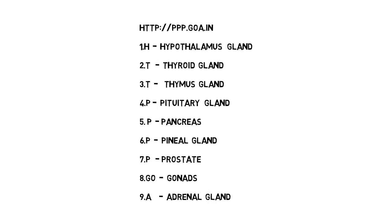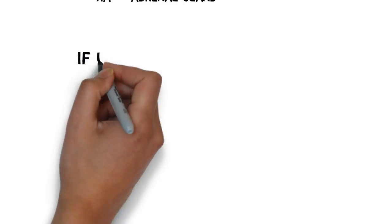So friends, try to remember this website name so that you can easily remember all the nine endocrine glands. Let me repeat once again: HTTP — H stands for Hypothalamus, T stands for Thyroid, T stands for Thymus, P stands for Pituitary gland. In PPP — P stands for Pancreas, P stands for Pineal gland, third P stands for Prostate. In GOA — G-O stands for Gonads, and A stands for Adrenal gland. All these are endocrine glands; endo means inside.